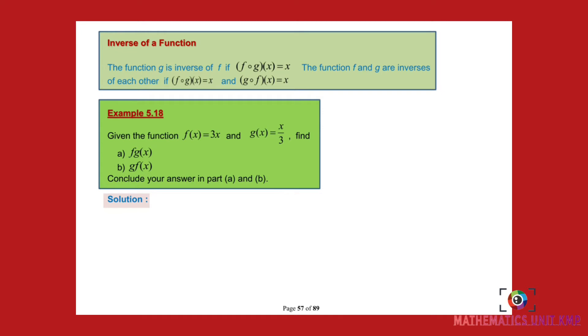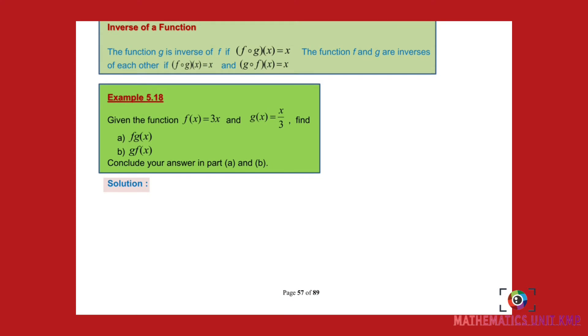We go to example 5.18. Given the function f(x) equals 3x and g(x) equals x over 3, find f(g(x)) and g(f(x)).